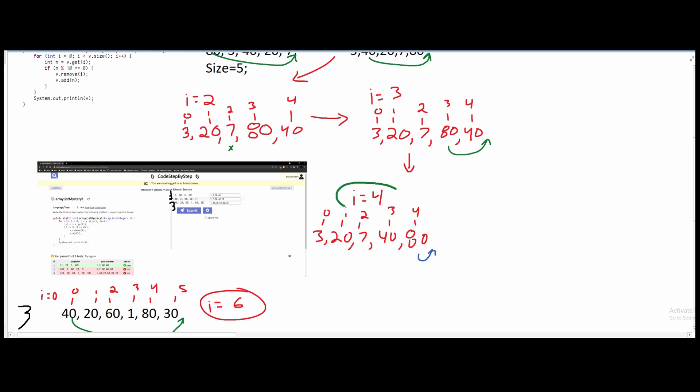Now we look at index 4. Index 4 is 80. So we can say that it gets removed and then added back in. So this is our final answer right here for the array.